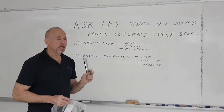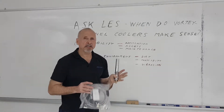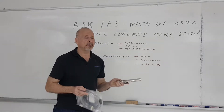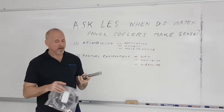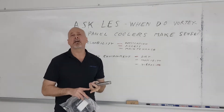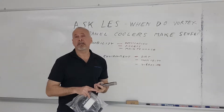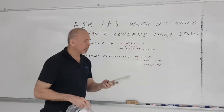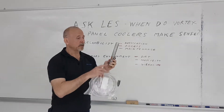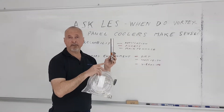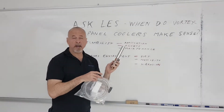Secondly, consider how often the air conditioner actually has to be operating. For example, variable frequency drives get hot on startup, but after that they cool down and don't need the air conditioning effect. So a panel cooler can simply be hooked up through a solenoid valve and a thermostat, and it will go on when required and go off when required.